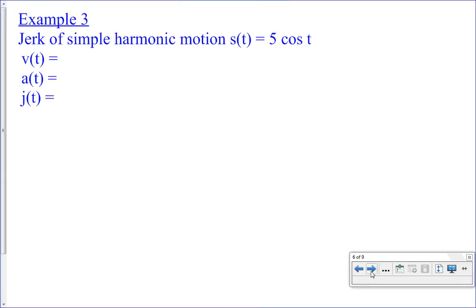Alright, jerk of a simple harmonic motion. 5 cosine of t. Harmonic means this is over and over and over again, right? That's what harmonic means. So, if this is a position, what's the velocity? Don't I have to do the derivative of that?